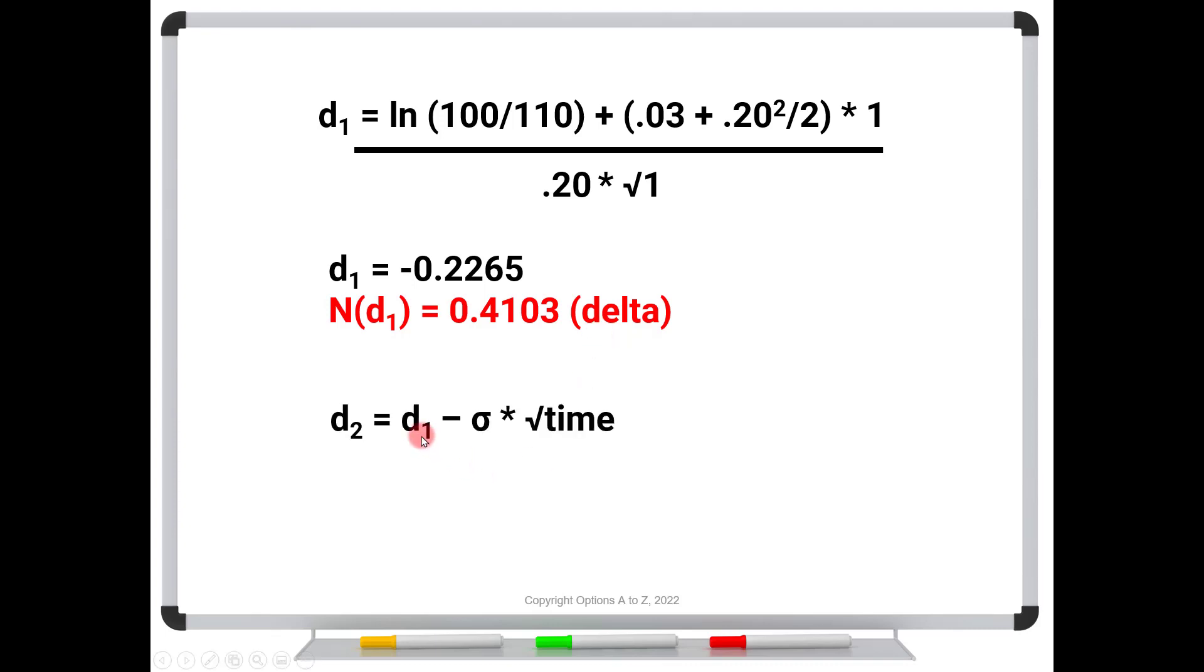Now for the D2, we're going to take D1. That's this number right here. Subtract off volatility times the square root of time. That comes up to be minus 0.4265. We throw that into Excel, find out the area under a bell curve, and that comes up to be 0.3348. And this is the probability of being in the money.